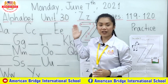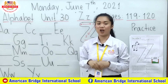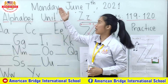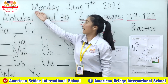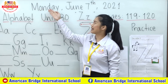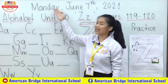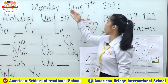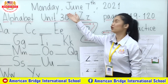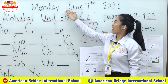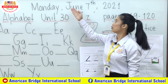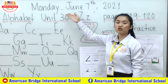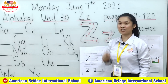Let's read the day, the date, and the month all together — let's spell also. Today is Monday. Spell: M-O-N-D-A-Y. Monday! How about our month? June — correct! Spell: J-U-N-E. June! How about the date today?